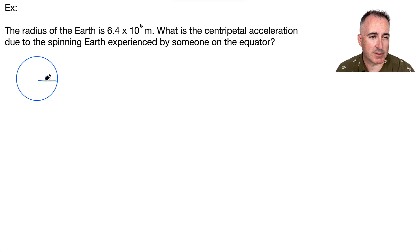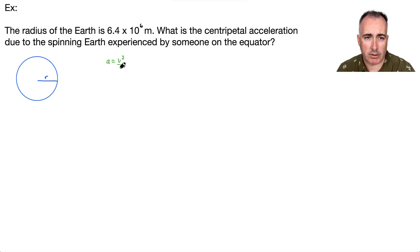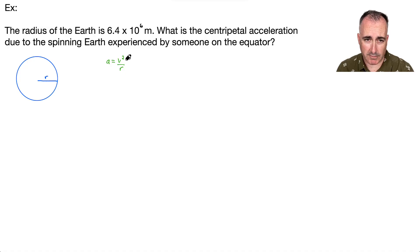Being on the equator means they're at the edge as the Earth rotates around its own axis. We need the equation for centripetal acceleration — it's good to always write it down to show the examiner you know what you're doing. I'm going to derive the last equation from first principles. We don't know V, so we need to work on that.